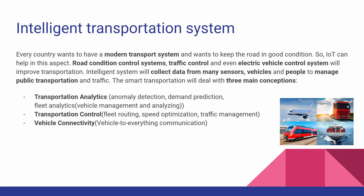Every country wants to have a modern transport system and keep roads in good condition. IoT can help in this aspect. Road condition control systems, traffic control, and even electric vehicle control systems will improve transportation. Intelligent systems will collect data from many sensors, vehicles, and people to manage public transportation and traffic. Smart transportation will deal with three main concepts: transportation analytics, transportation control, and vehicle connectivity.